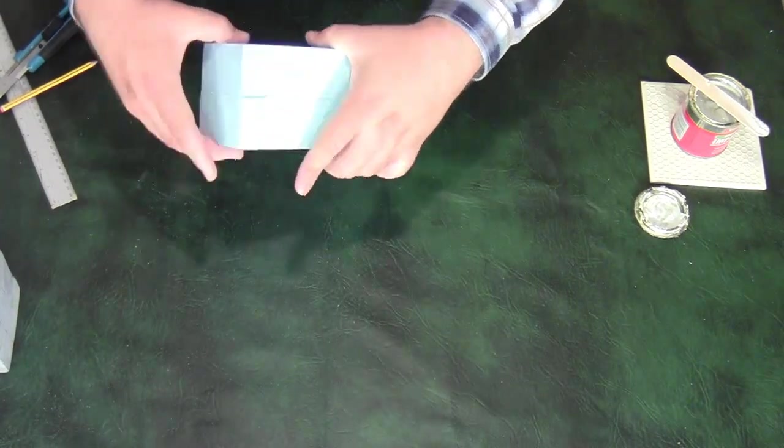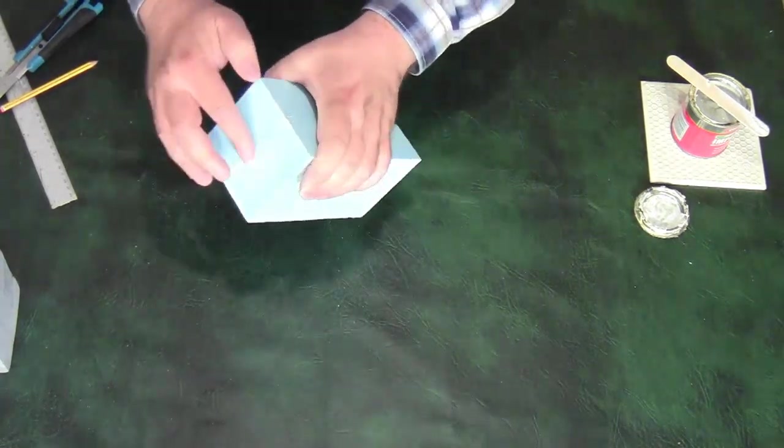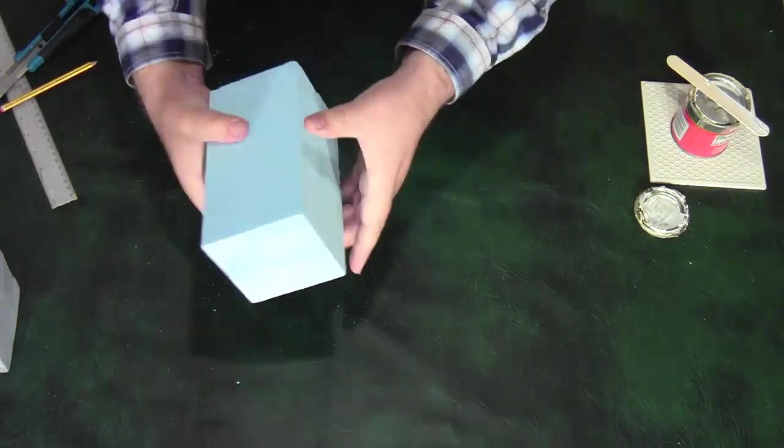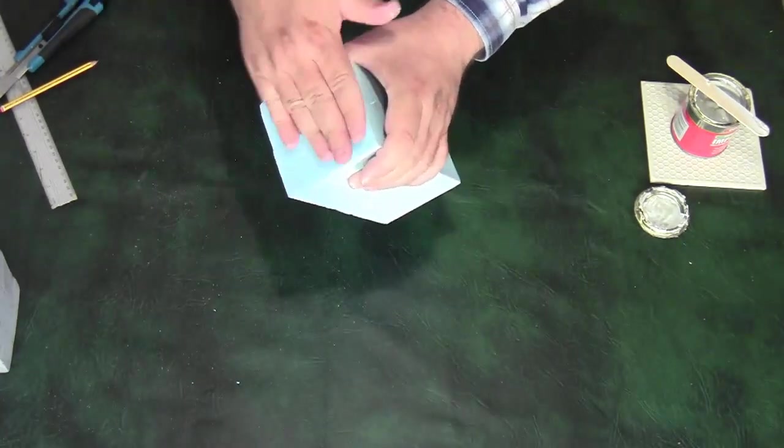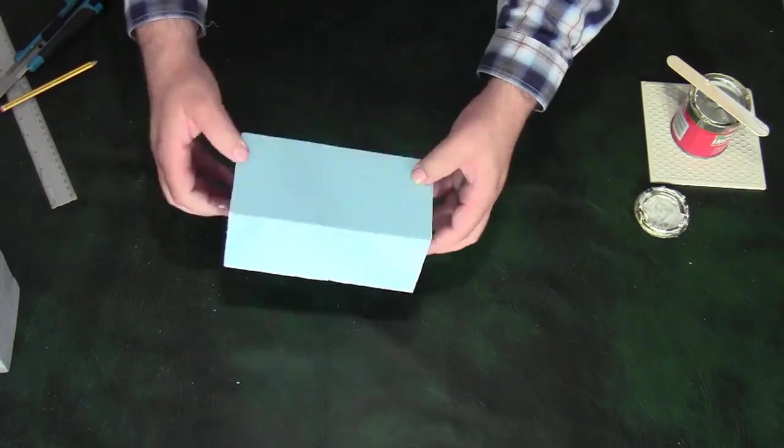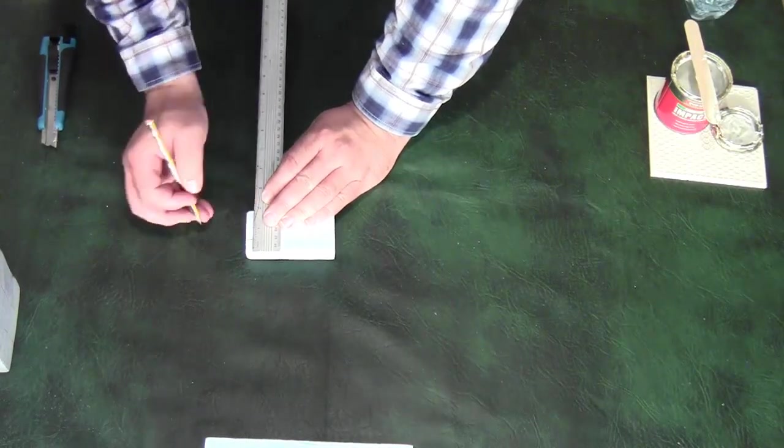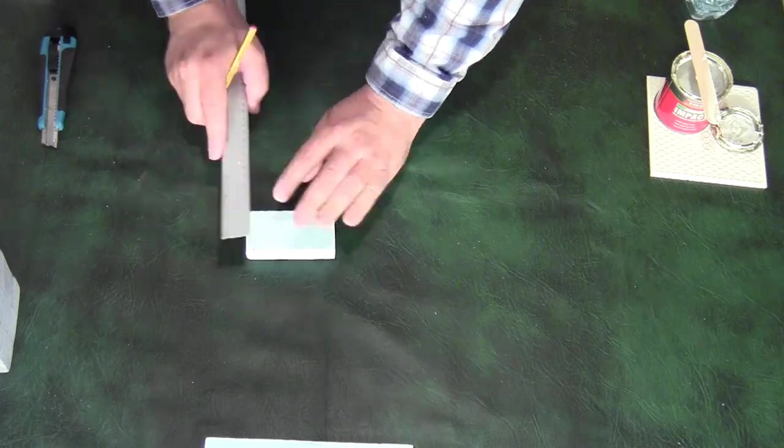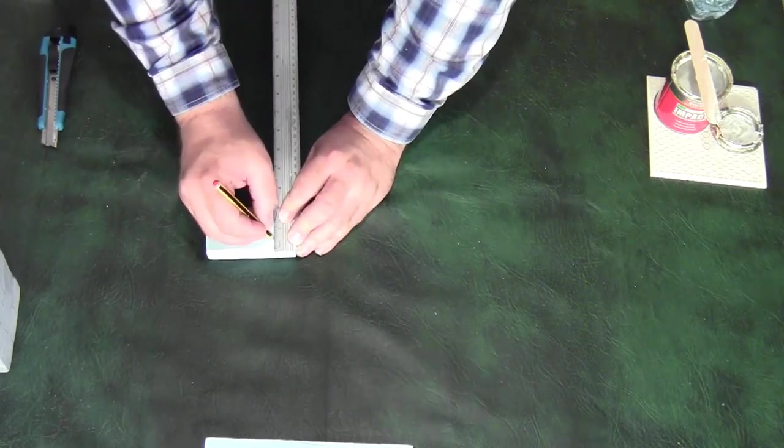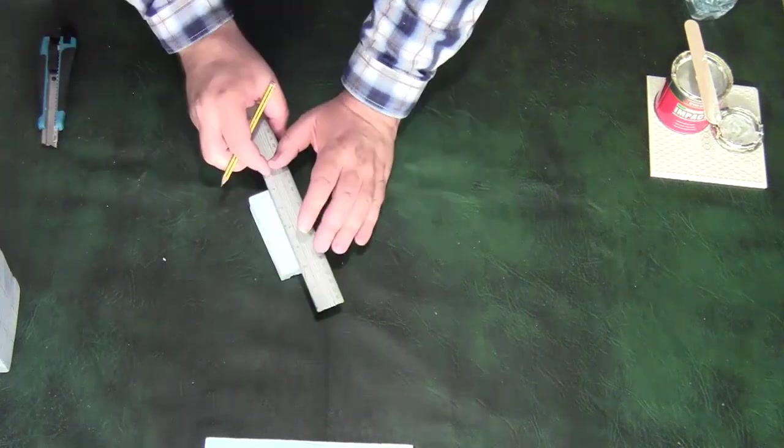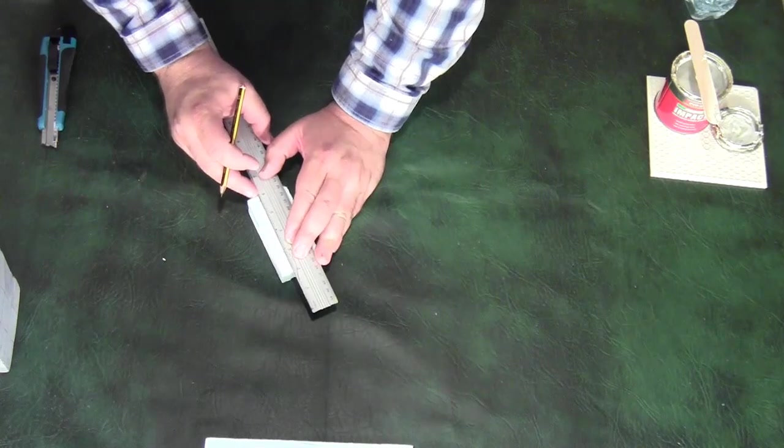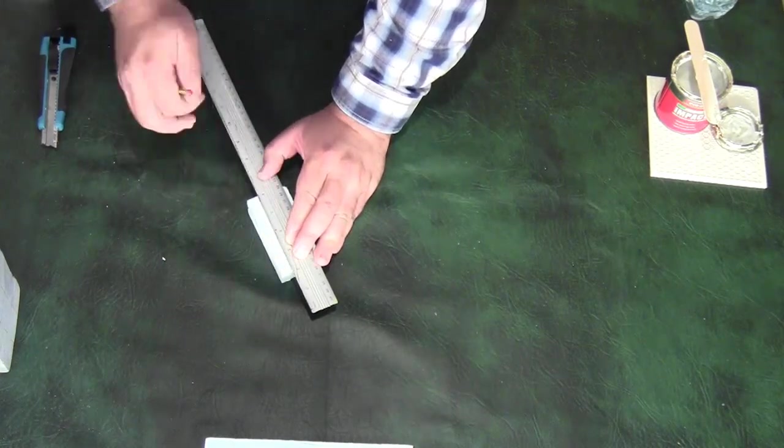I'll push them together, wipe off the excess from around the edges, and then leave to dry. While the two pieces of foam are setting, I can start marking out the battlements. So I take the smaller pieces of foam that I cut out earlier, and mark 12 millimeters or half an inch along each edge.